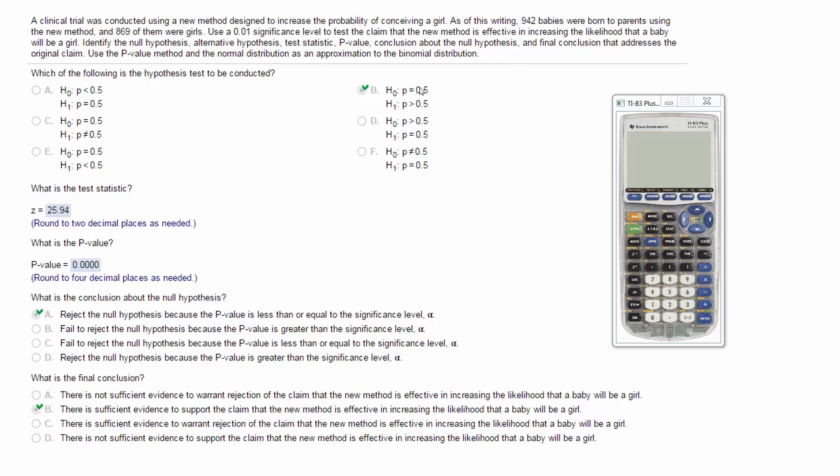So half the time you're gonna get a girl. So that's what this null hypothesis means. My alternative says I think you're gonna get a girl more than half of the time based off of this data.